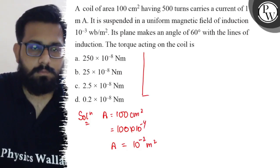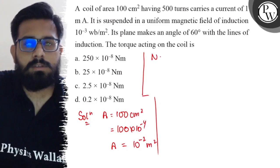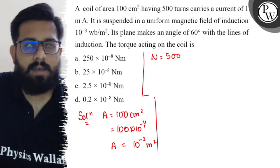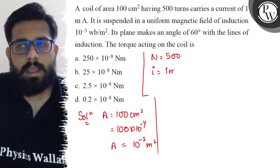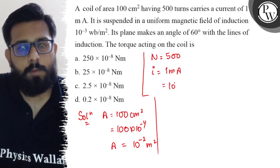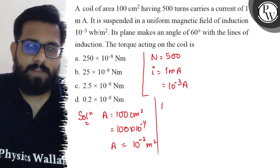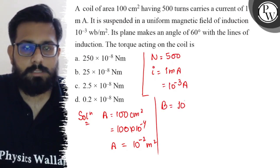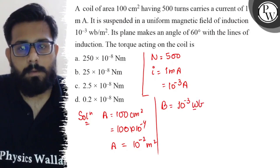Now we have the number of turns as 500. We have the current as 1 mA, which can be written as 10^-3 A. Also we have the value of magnetic induction, which is equal to 10^-3 Weber per meter squared.